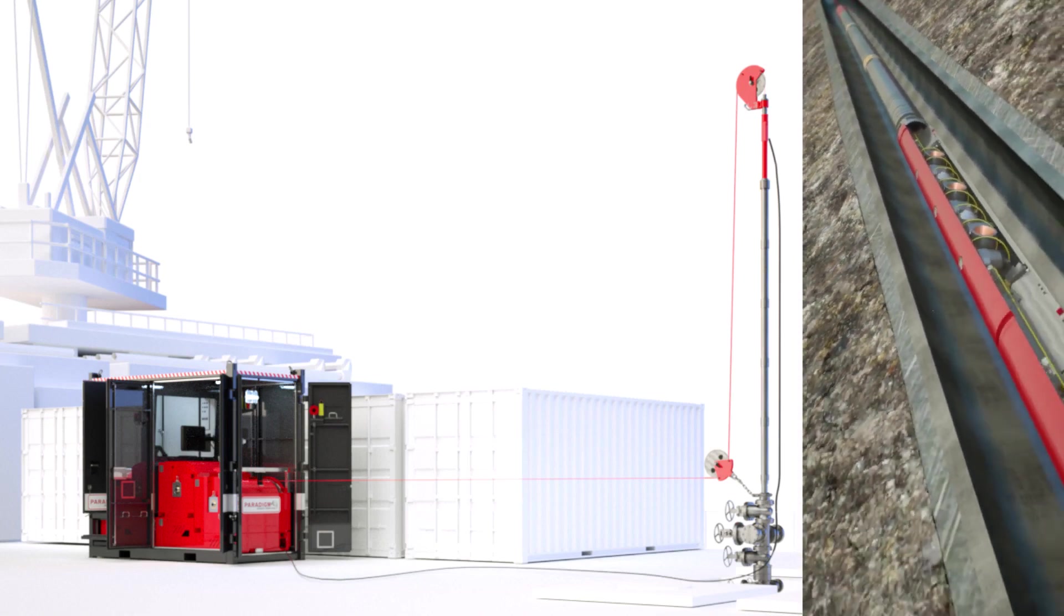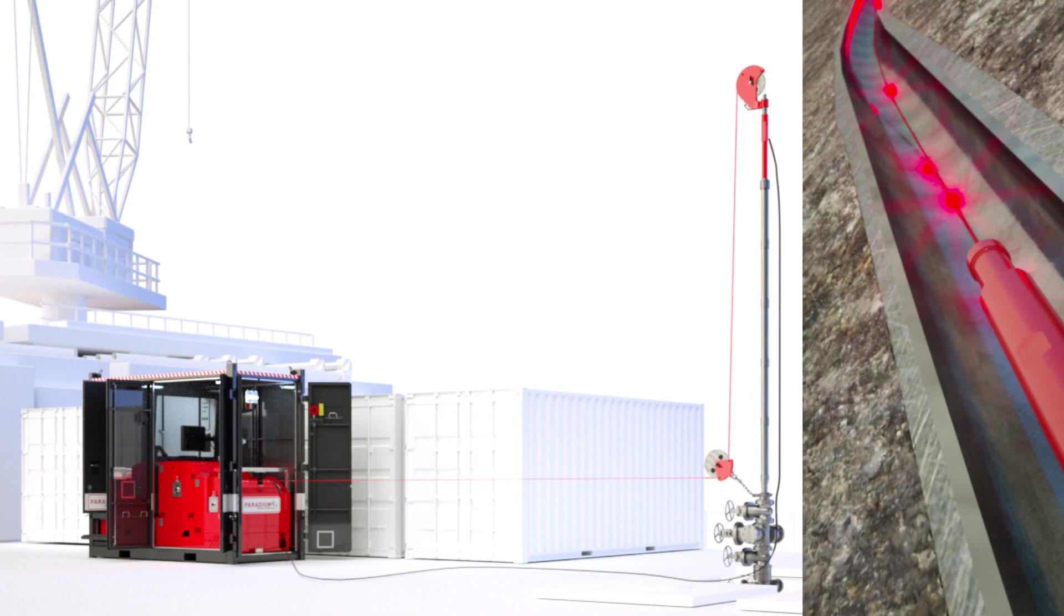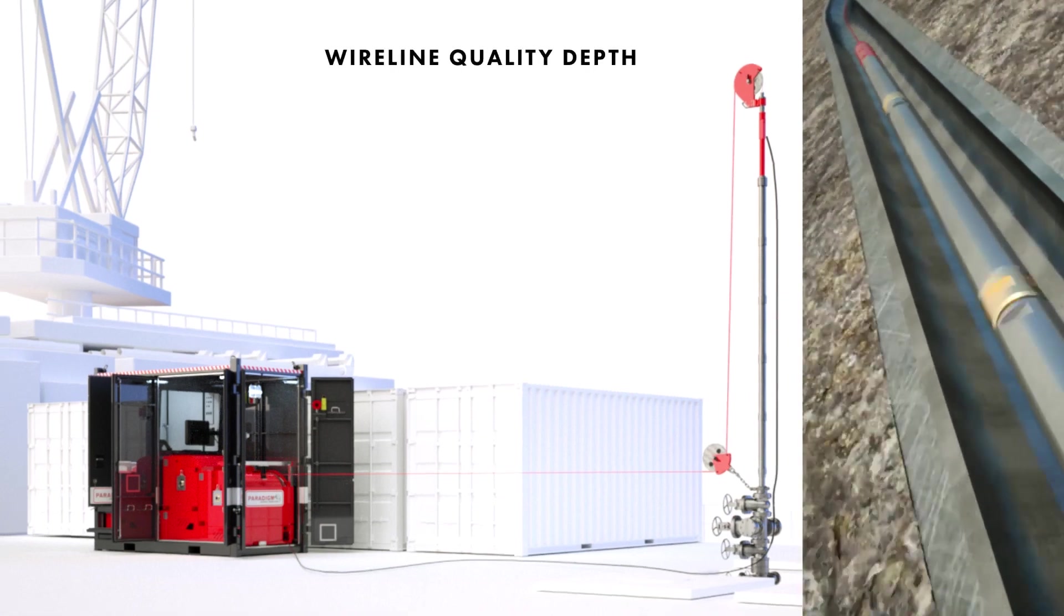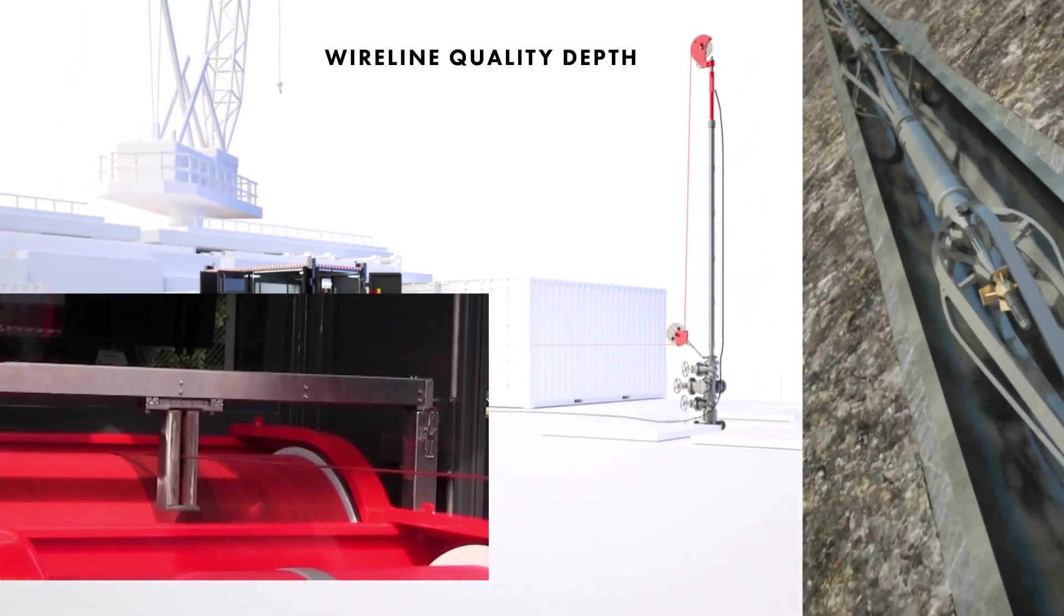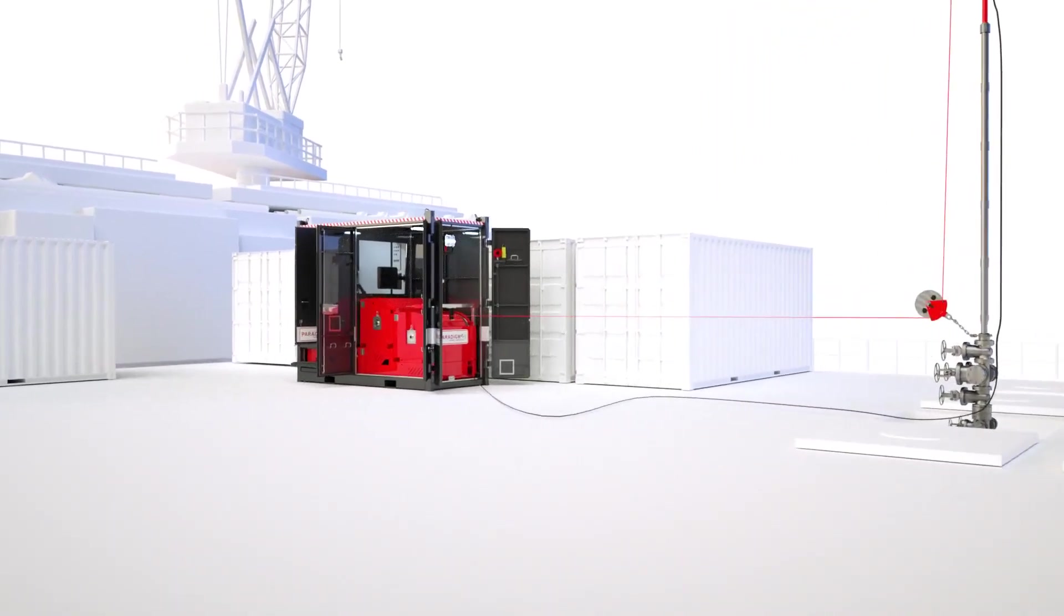A firing head can be activated after correlating with the casing collar locator or the optional gamma ray. For the first time, wireline quality confirmation of depth for critical perforating and logging operations is reliably achieved real-time on SlickLine.